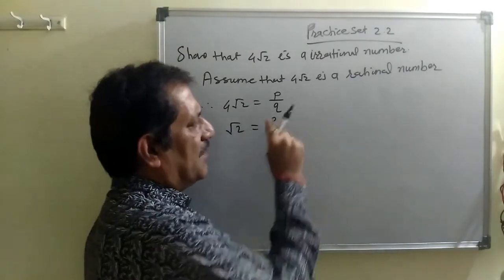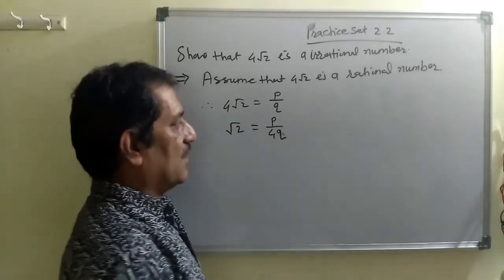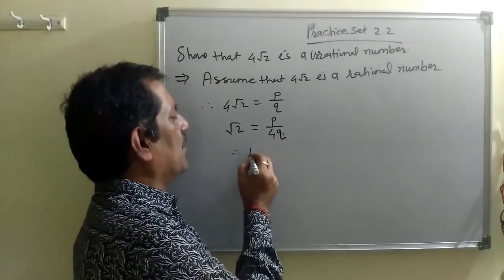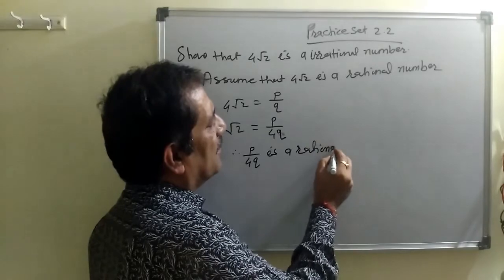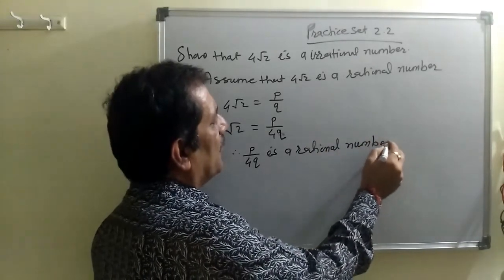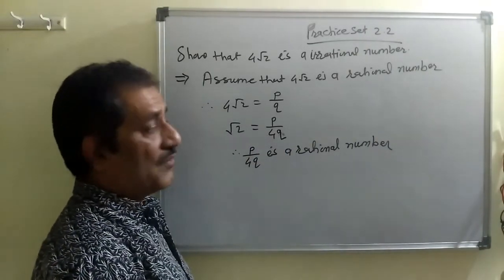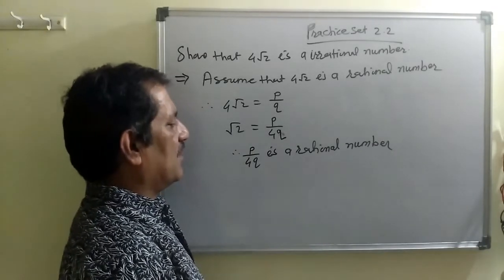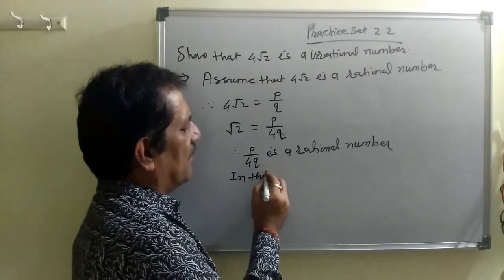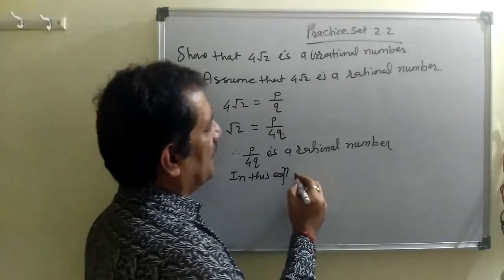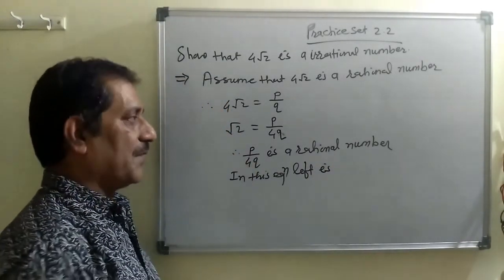We assume that 4 root 2 is a rational number. Therefore it can be expressed in the form P upon Q. So 4 root 2 equals P upon Q. Here P is an integer, Q is an integer, and 4 is an integer. Therefore root 2 equals P upon 4Q, and P upon 4Q is a rational number.